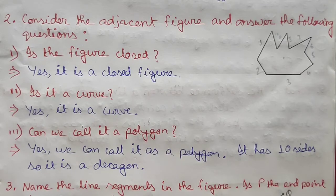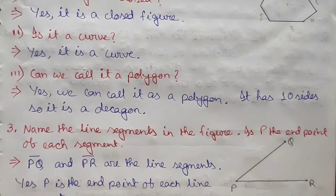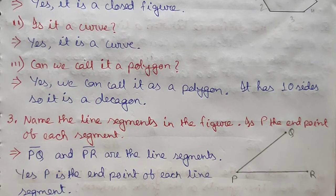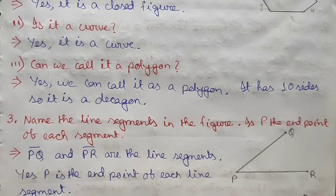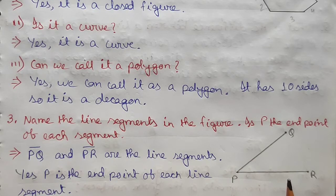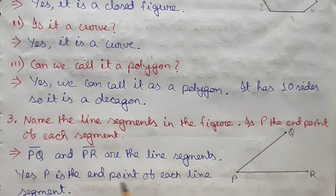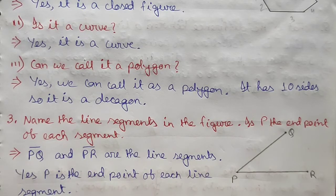The third sub-question: name the line segments in the figure, and is P the endpoint of each line segment? A line segment is a part of a line. The line segments here are PQ and PR. Yes, P is the endpoint of each line segment.